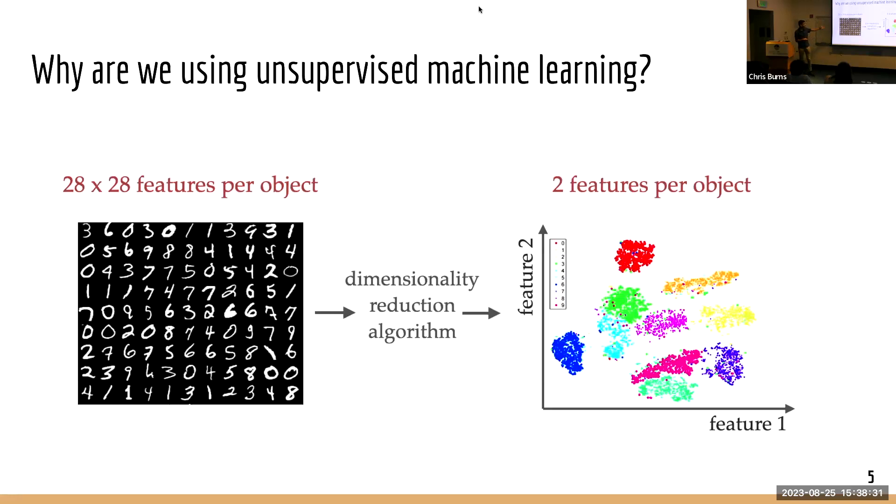Take this simple example of working with the MNIST data set, it's just a data set of digits. Every digit is a 28 by 28 pixel array. What our unsupervised machine learning or dimensionality reduction does is it takes our 28 by 28 vector for every single digit and reduces the representation into 2D feature space. As you see here, these different clusters represent the different digits coming out from this data set.